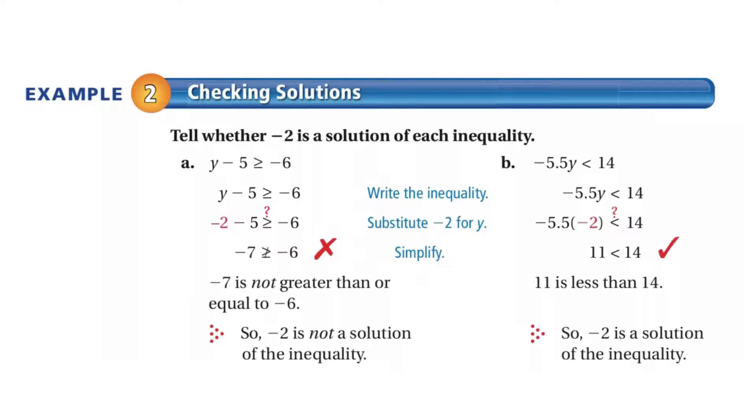If we put negative 2 in the second inequality, for example 2b, negative 5.5 times negative 2 is 11. Is 11 less than 14? Yes. Because that works out to be true, negative 2 is a solution of the inequality.